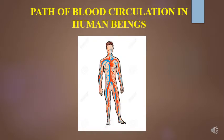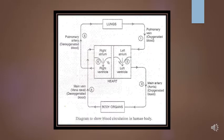Today we will study the path of blood circulation in human beings. Look at the diagram given. The deoxygenated blood is collected from different parts of the body through two major veins called superior and inferior vena cava, check number 4 in the diagram, and is brought to the right auricle.